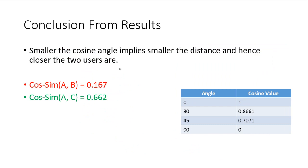Now it's time to draw conclusion from the previous step results. We have seen that cosine similarity of A and B is 0.167 and cosine similarity of A and C is 0.662. To understand these results we should know the property of cosine function which says that as you increase the angle, cosine value will decrease.